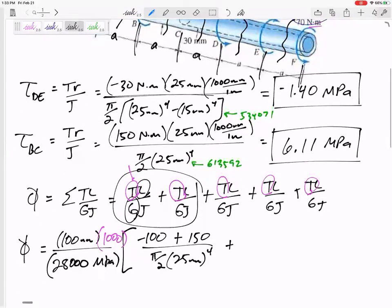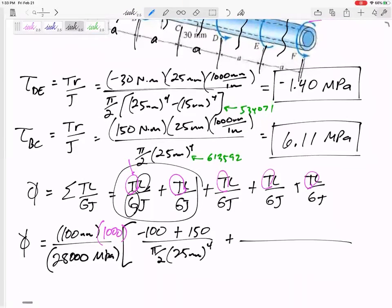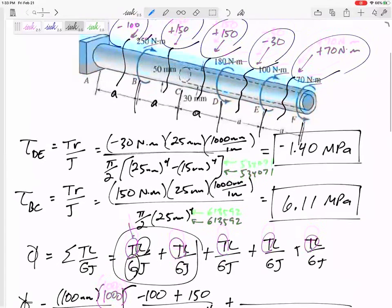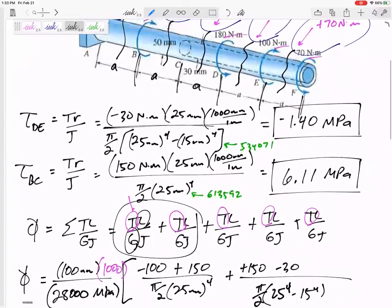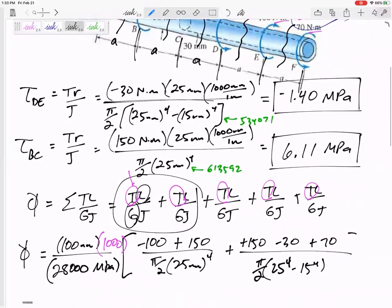Now, these last three sections have the same J. These last three sections have a J of pi by 2, 25 to the fourth minus 15 to the fourth. Now, don't try to tell me pi by 2, 10 to the fourth. No, it's, you know, you got to raise both of those R's to the fourth power separately and subtract them. And then the torque inside each of these sections, positive 150, negative 30, positive 70. And there we go.